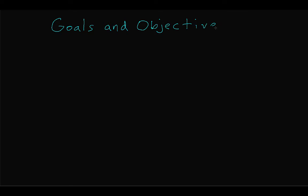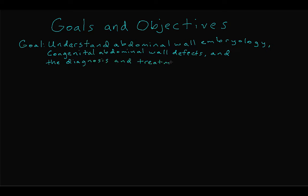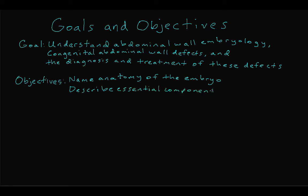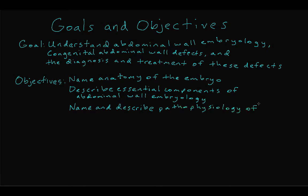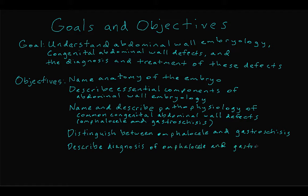Let's review some goals and objectives. The goal of this video is to understand abdominal wall embryology, congenital abdominal wall defects, and the diagnosis and treatment of these defects. After viewing this video, the student will be able to name the anatomy of the embryo relevant to abdominal wall development, describe the essential components of embryologic development of the abdominal wall, name and describe the pathophysiology of common congenital abdominal wall defects — namely omphalocele and gastroschisis — distinguish between them, describe how to diagnose them, and describe how to manage them.